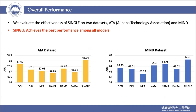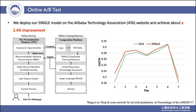We evaluate the effectiveness of the SINGLE model on the news recommendation dataset MIND and the Alibaba technology article recommendation dataset ATA. As shown in the figures below, our SINGLE model achieves significant improvement compared to other baseline models. Our experiments also showed the effectiveness of SINGLE by deploying the model on the Alibaba ATA website, achieving about 2.4% improvement, which further confirms the effectiveness of our SINGLE model.